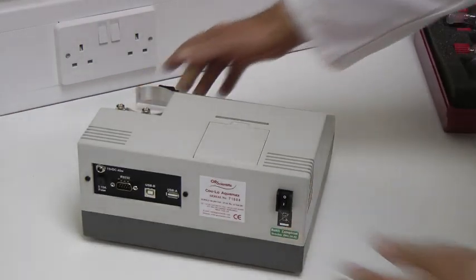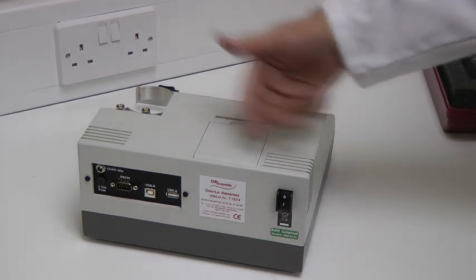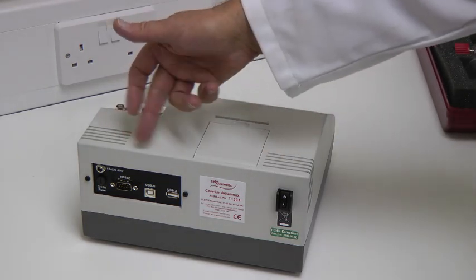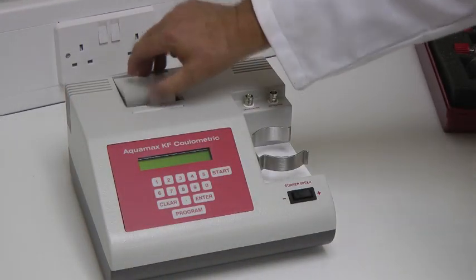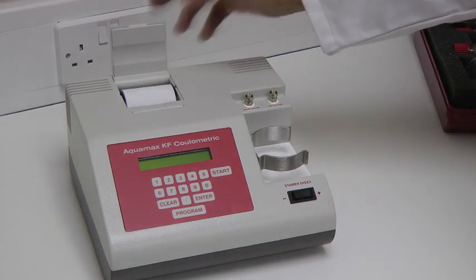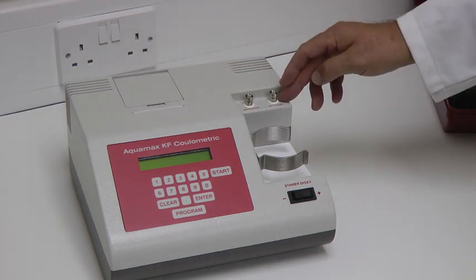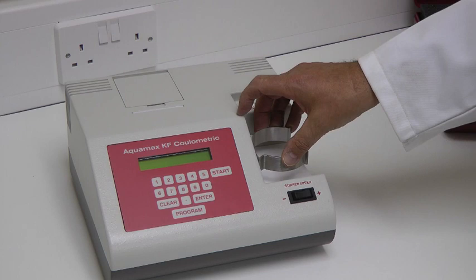At the rear of the unit are the power switch, the power inlet, the fuses and the RS232 and USB connections. At the top and front are the printer, connections for the electrodes, the titration vessel holder, and the front panel.